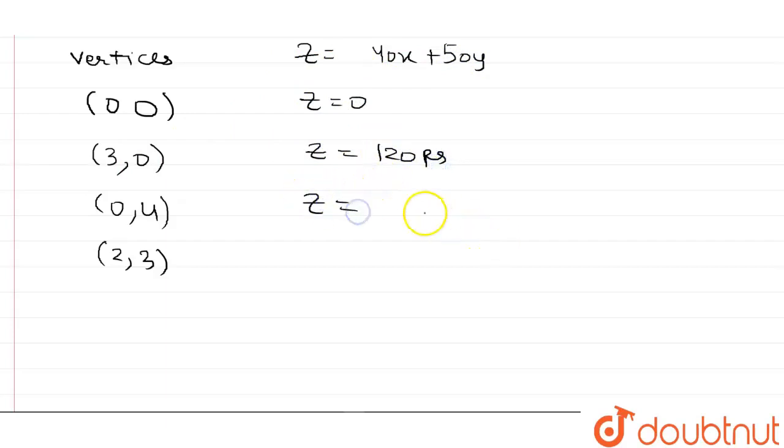By putting the value (0,4) in the equation we got Z equal to 200 rupees. And then we got Z is equal to 230 rupees.